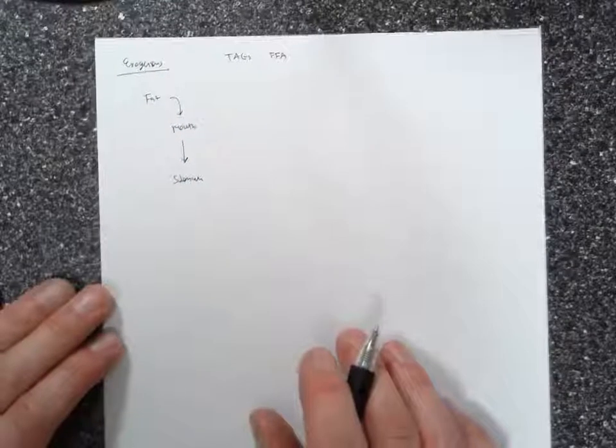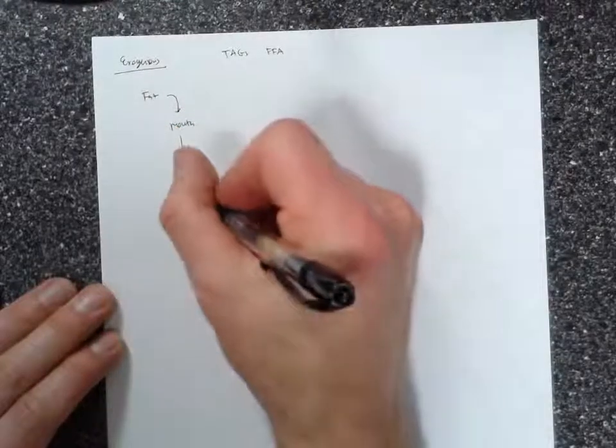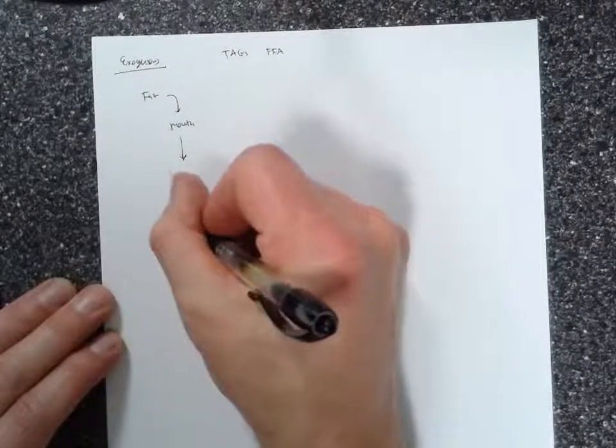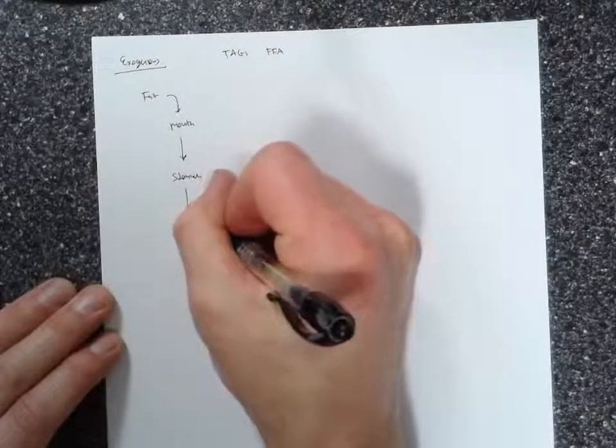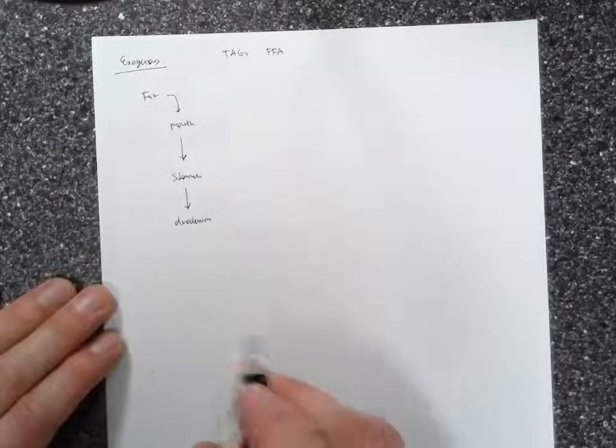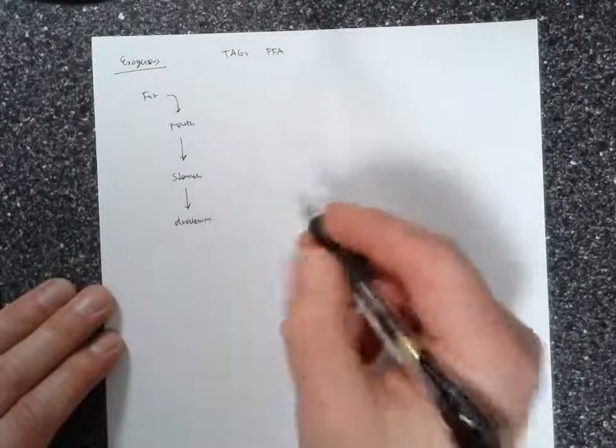Not a whole lot happens in the stomach. It's not until the fats reach the duodenum, which is the beginning of the small intestine, that they really begin to be digested.